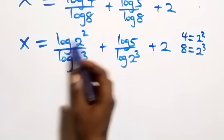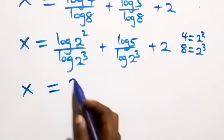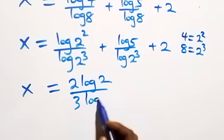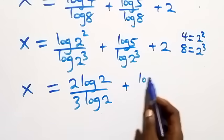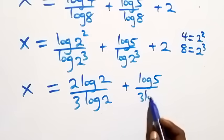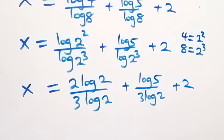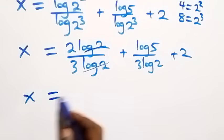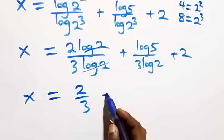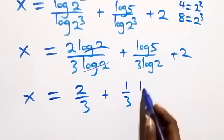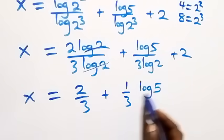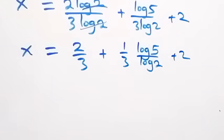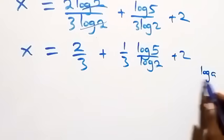Applying the power rule of logarithms, the exponents come down: x equals 2 log 2 over 3 log 2, plus log 5 over 3 log 2, plus 2. The log 2 terms cancel in the first fraction, giving x equals 2 over 3, plus 1 over 3 times log 5 over log 2, plus 2.